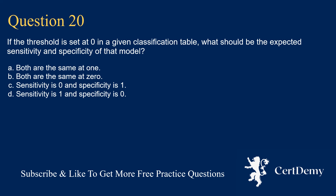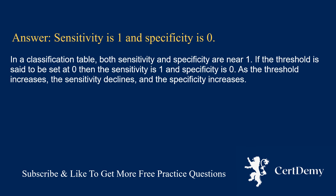Question 20. If the threshold is set at 0 in a given classification table, what should be the expected sensitivity and specificity? Options: both are 1; both are 0; sensitivity is 0 and specificity is 1; sensitivity is 1 and specificity is 0. The answer is: sensitivity is 1 and specificity is 0. In a classification table, if the threshold is set at 0, then sensitivity is 1 and specificity is 0. As the threshold increases, sensitivity declines and specificity increases.